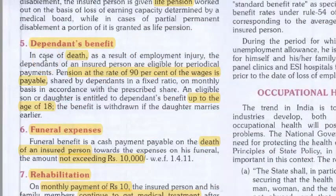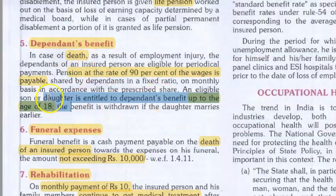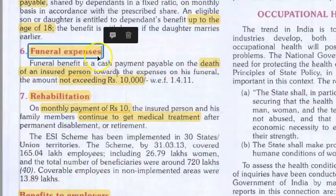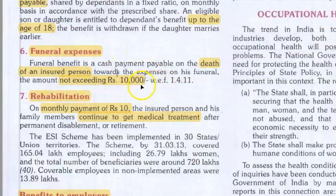Now to dependents benefit. In case of death of the insured person, dependents will receive pension at the rate of 90% of wages until the children reach age 18. Additionally, funeral expenses are provided, not exceeding ₹10,000.